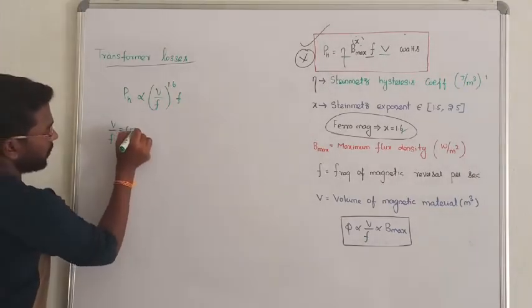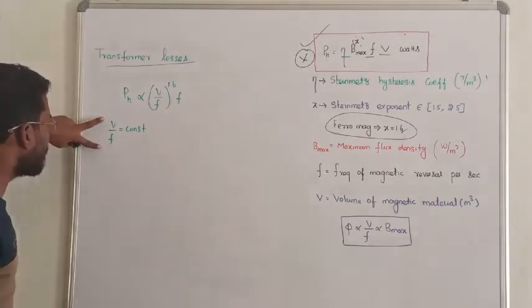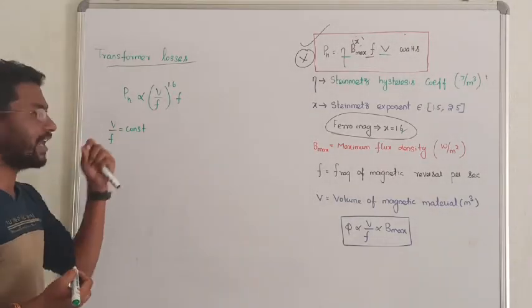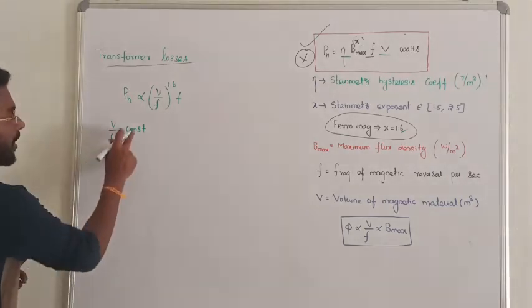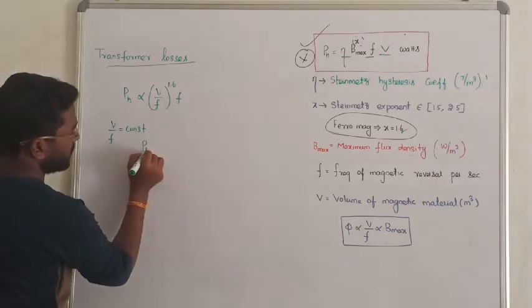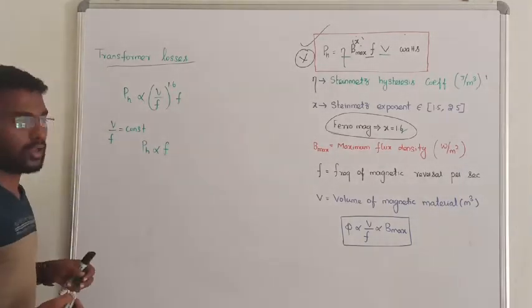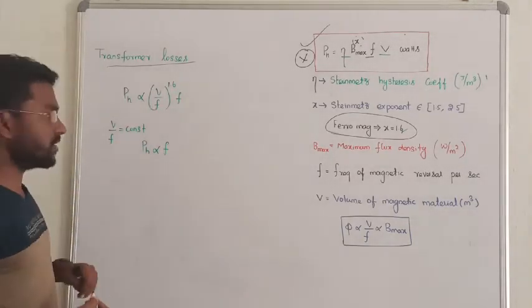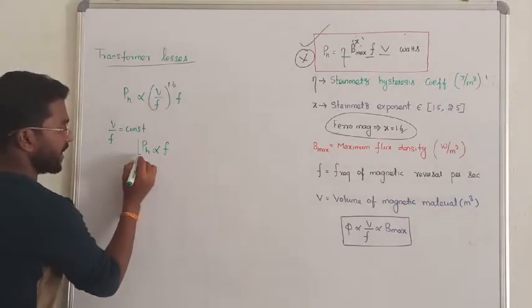Now case number 1: when the value of V by F is constant, that is voltage V by F and frequency V by F are constant. When V by F is constant, hysteresis loss will become directly proportional to frequency.